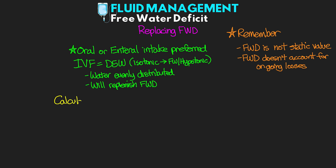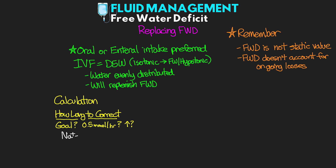So let's talk about the calculation for this. We can determine how to correct the free water deficit with a couple quick calculations. First, we need to determine how long it's going to take to correct their free water deficit. We need to have a goal of how much we want to lower the sodium each hour. A conservative number would be something like 0.5 millimoles per hour — this is a good conservative number to try and prevent cerebral edema, but we may choose to go with a higher rate, especially with higher sodium levels and especially if the patients are experiencing symptoms as a result. So we take the sodium level of the patient minus 140 and divide that by our correction rate. Using our last example of the 25-year-old male with a sodium of 158: 158 minus 140 divided by 0.5 gives us 36 hours that we would want to correct this.